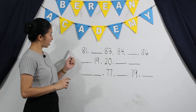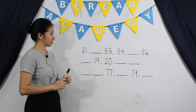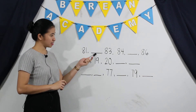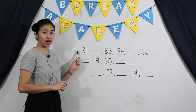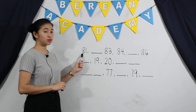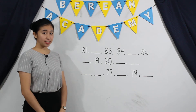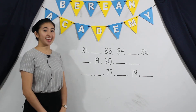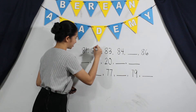We are going to start with a set of numbers. To find out the missing number here, we have to identify what number is after 81. So what is the number after 81? It's the number 82. Very good.